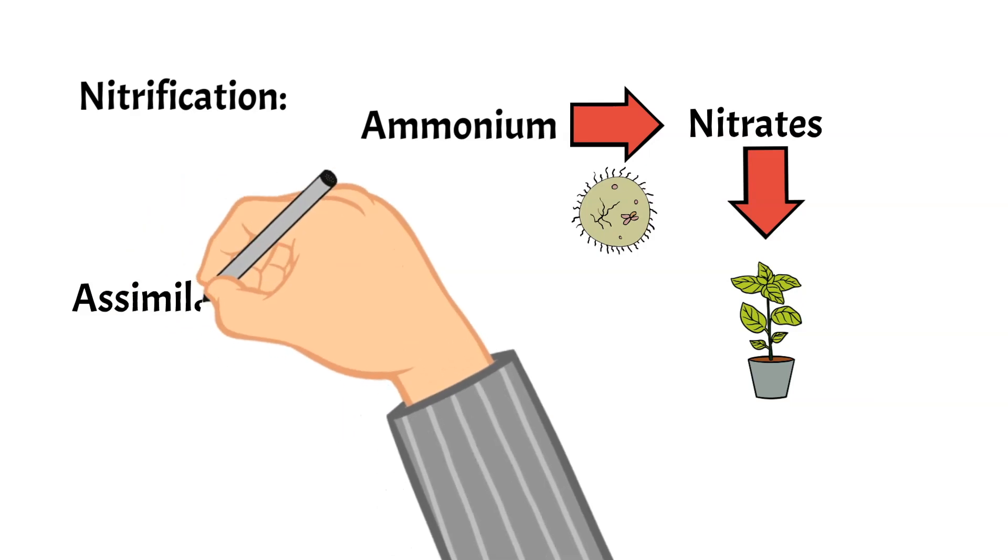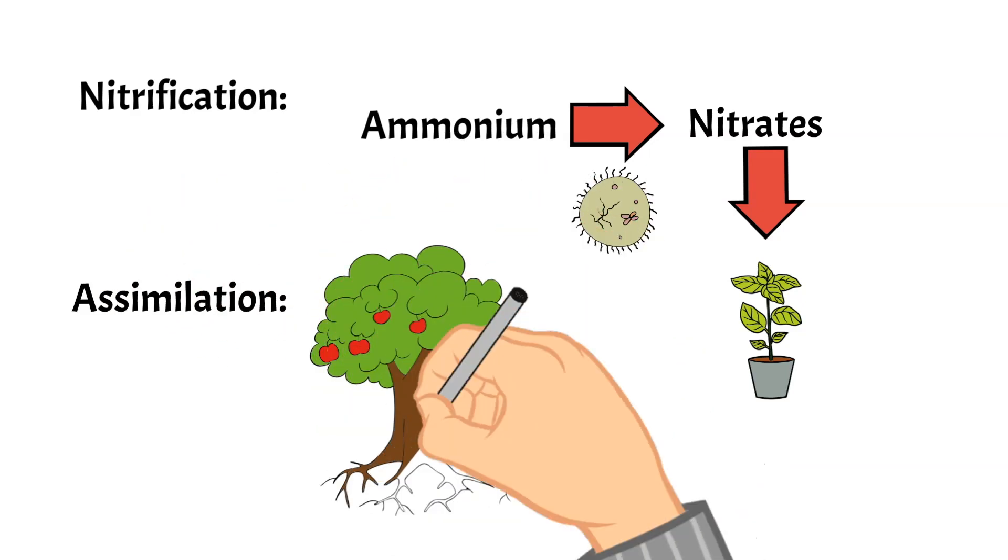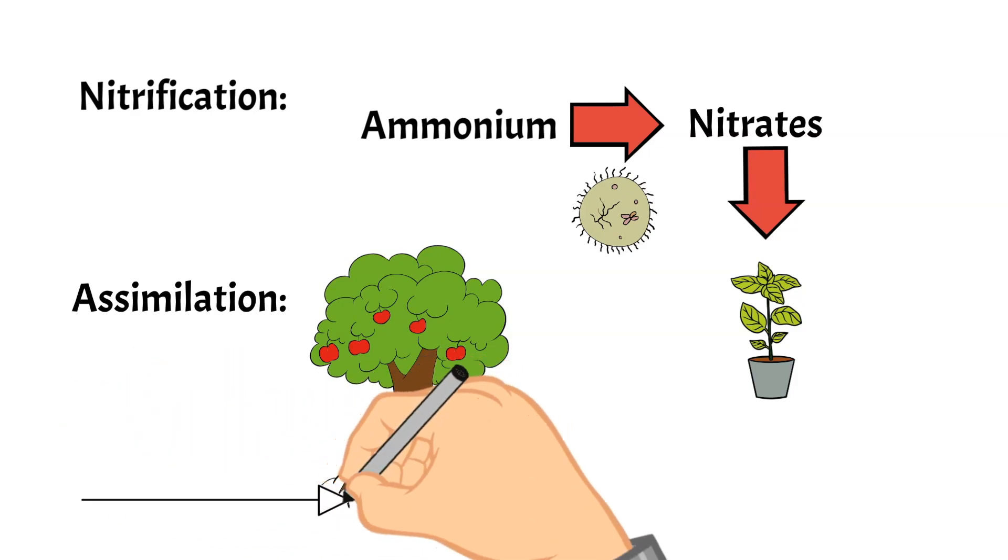Then is assimilation and this is how the plant gets that nitrogen and they do this by absorbing the nitrates from the soil through their roots.